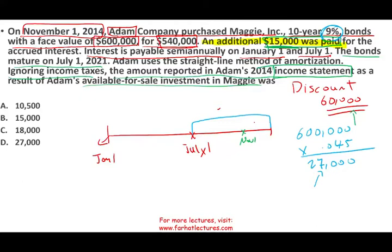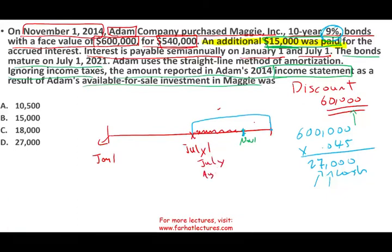Adam purchased the bond on November 1st. That's the total amount of cash Adam would receive because on January 1st, Maggie will pay Adam $27,000 in cash. But is this going to be the interest revenue? No. Adam purchased the bond on November 1st, which means part of this cash interest Adam received should not be interest revenue — because someone else held the bond for July, August, September, and October. Someone held the bond for four months.